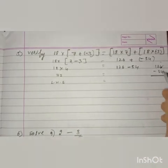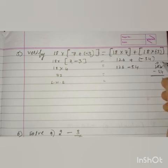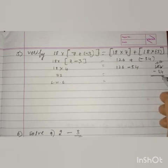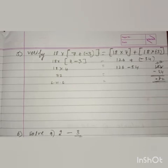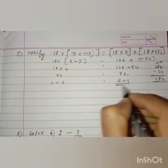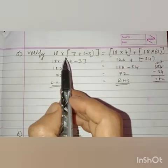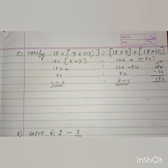Subtracting 126 minus 54: we borrow to get 12 minus 5 is 7, so the result is 72. RHS is also 72 and LHS is also 72.